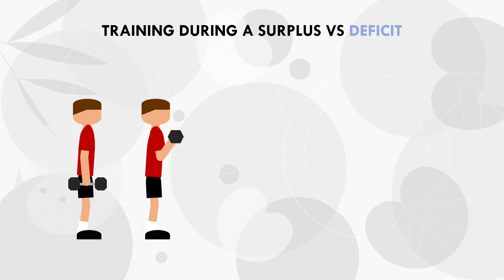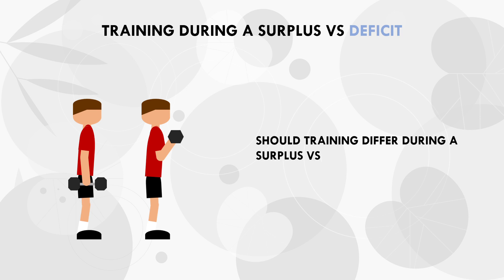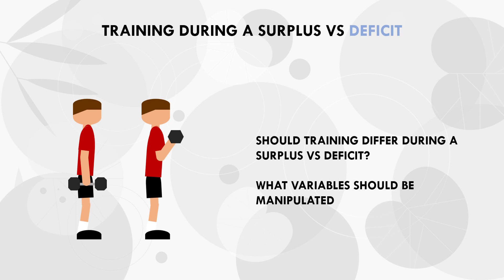Lifters often go through cycles of bulking and cutting to maximize muscle growth and get as lean as possible. It is commonly assumed that training should differ depending on whether you're in a calorie surplus versus a deficit. Should training differ between these nutrition phases, and if so, how should training be manipulated? In this video we will try to answer these questions.